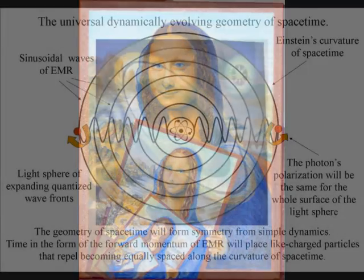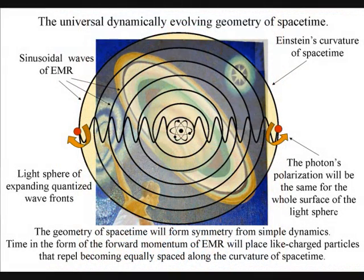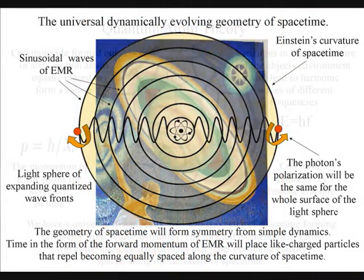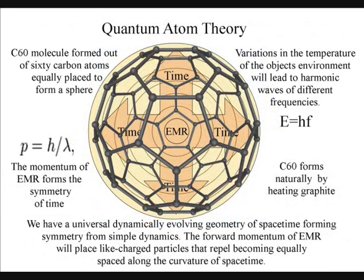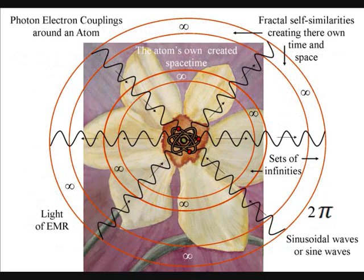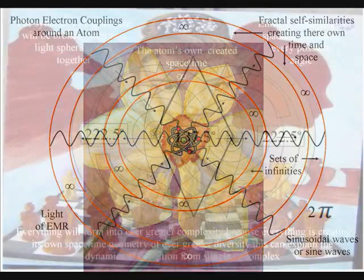The forward momentum of electromagnetic radiation will place light-charged particles that repel, becoming equally spaced along the curvature of space-time. This will give us a mathematical symmetry for the evolution of life, from simple to complex.